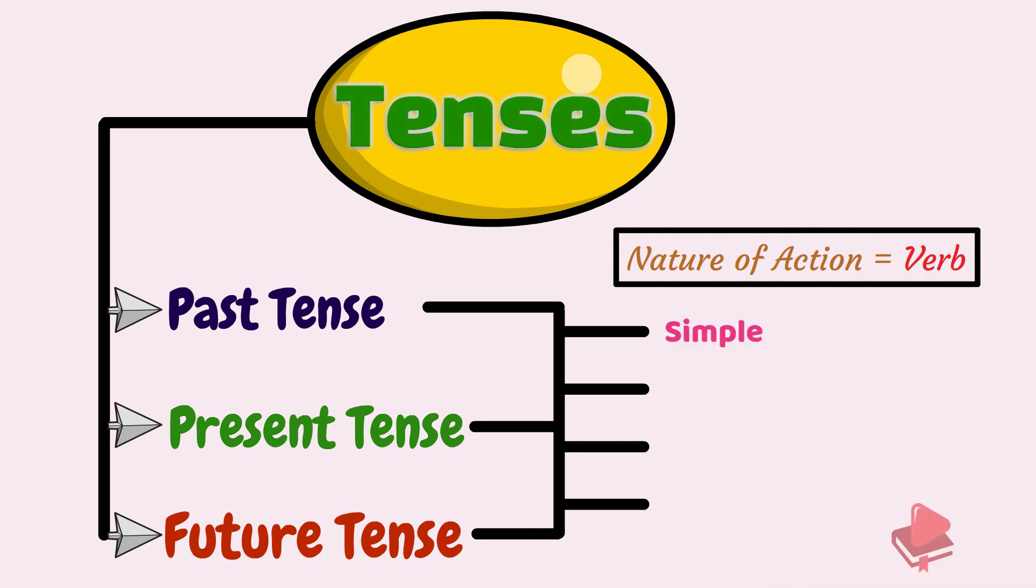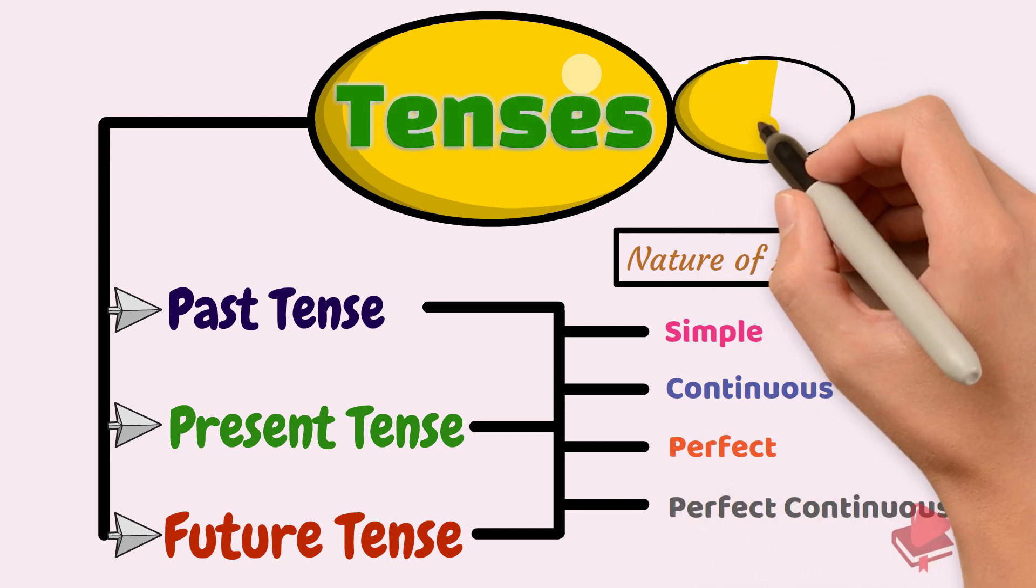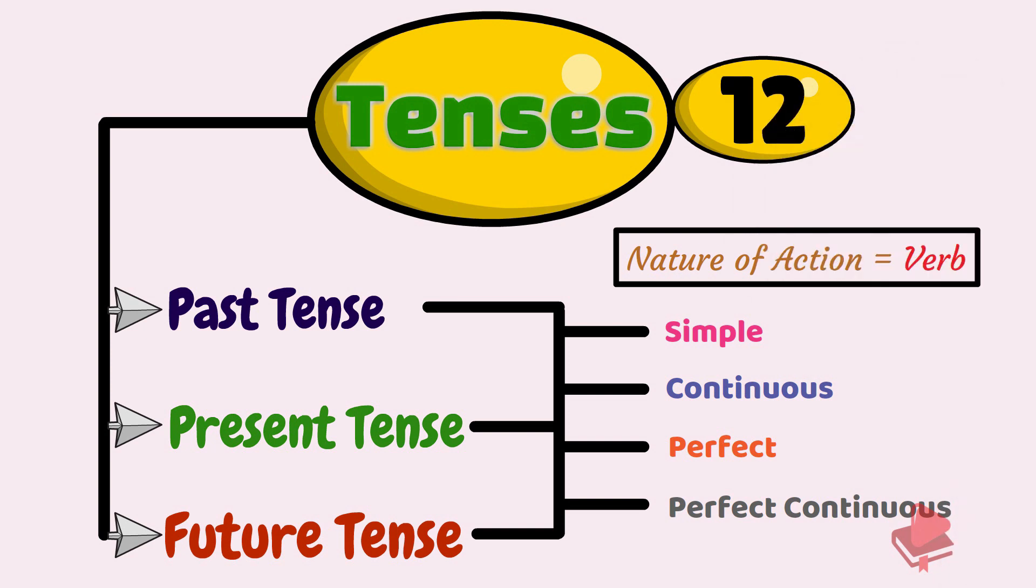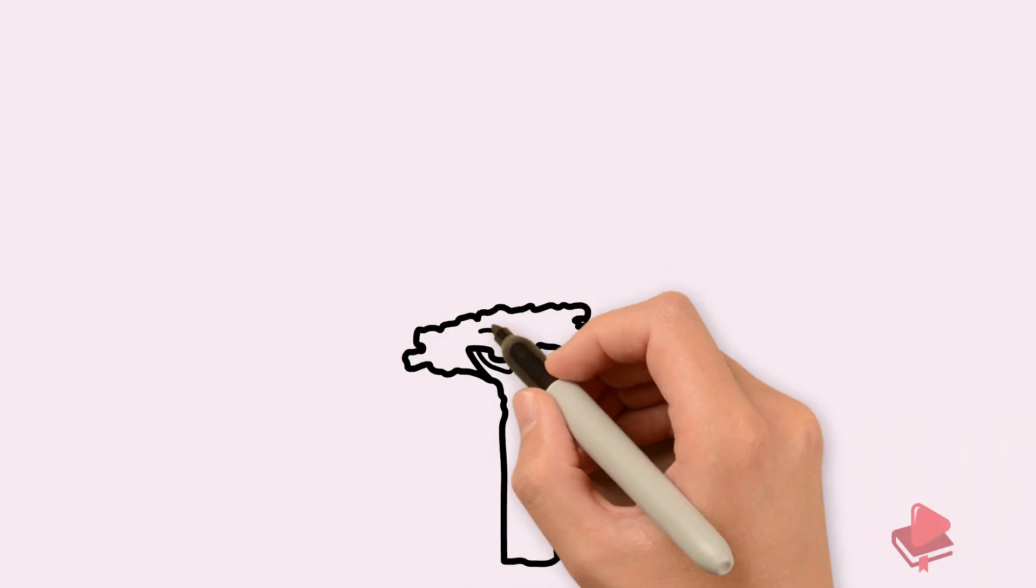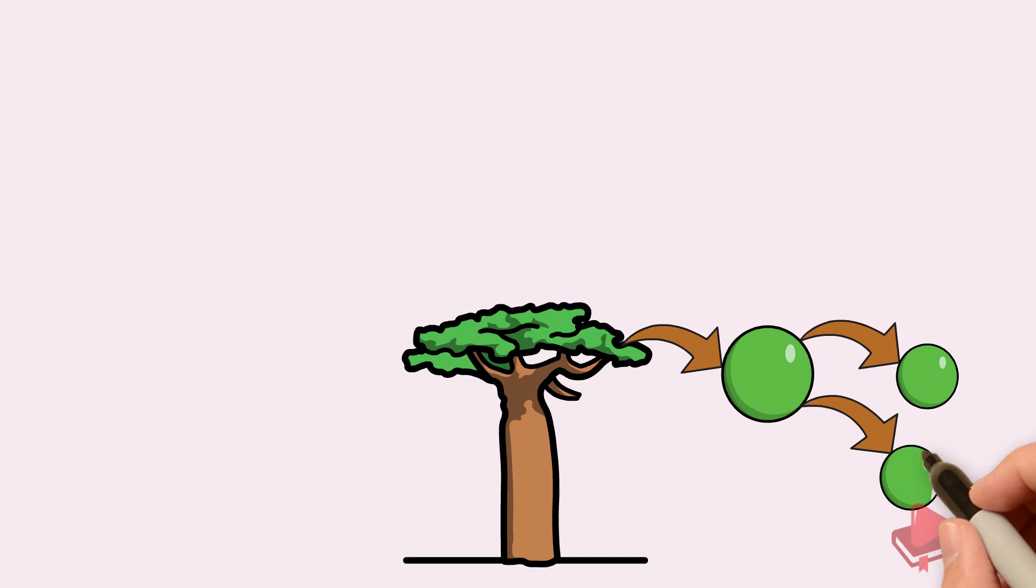They are simple, continuous, perfect, and perfect continuous. This way, we get the total possibilities of 12 tenses in English grammar. Let us understand more about each of these groups of tenses.